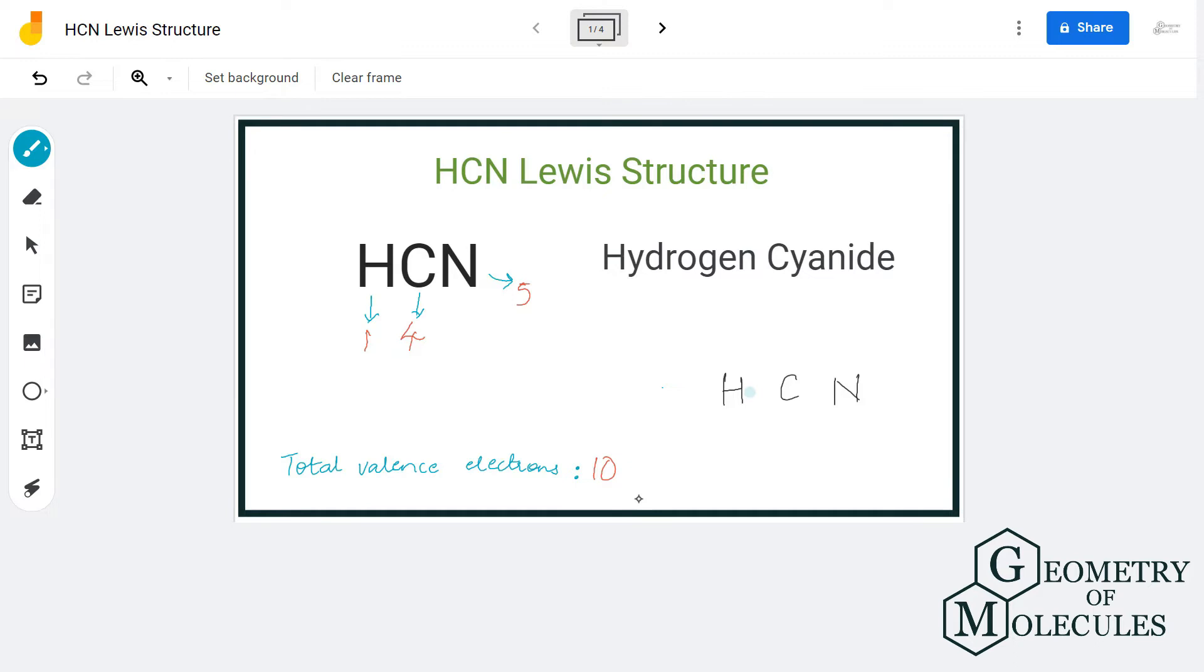We'll place carbon in the center as it's the least electronegative atom in this molecule. The hydrogen atom will go on the outside because it can never take the central position in a Lewis structure. Similarly, nitrogen will also be placed on the outside.